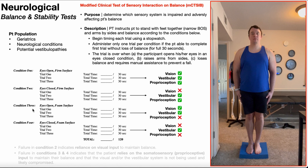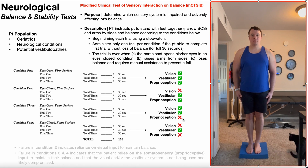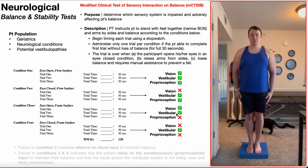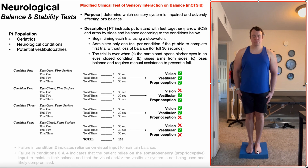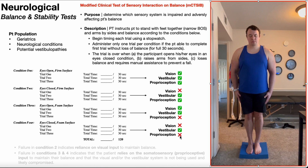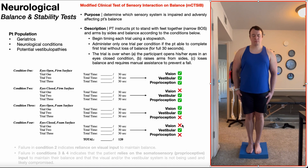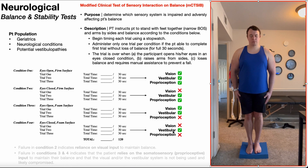For conditions three and four, the patient stands on a compliant surface — most commonly a foam pad. In condition three, eyes are open on the foam surface. The foam confuses proprioceptive information, so the brain discards it as unreliable and relies only on visual and vestibular input. Condition four is the most difficult: standing on the foam pad with eyes closed. Proprioceptive information is discarded and there is no visual input, so the brain relies solely on vestibular input.